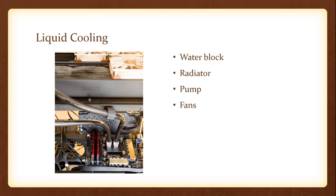In liquid cooling, two lines pass by the CPU — cold water comes in, warm water goes out. It's the most effective cooling method, but if you bump the system and break a pipe, you'll have liquid all over. We can cool the CPU with a heat sink (passive cooling) or with a fan or liquid cooling (active cooling methods).